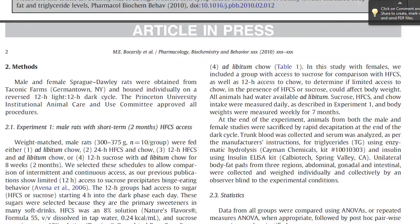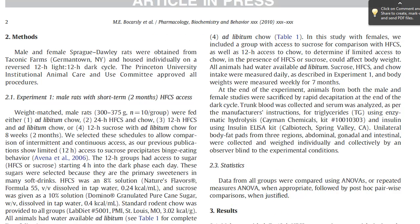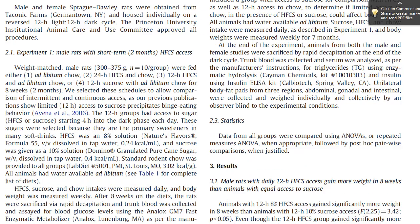On to the methods. There are three experiments in this paper, and the methods section is broken down accordingly. Experiment 1 compares weight gains in males-only rats. Note the population size, which is relatively small — 10 rats per group. All the rats are given as much rat chow and water as they want. Group 1 gets no sugar — that's our control. Group 2 gets 24-hour access to HFCS solution. Group 3 gets only 12-hour access to HFCS, and Group 4 gets 12-hour access to sucrose solution.